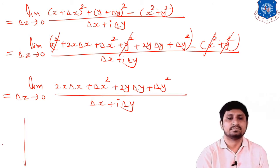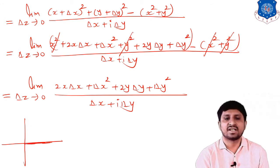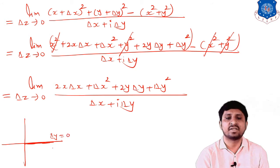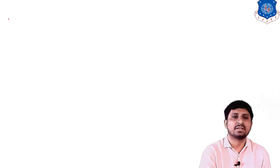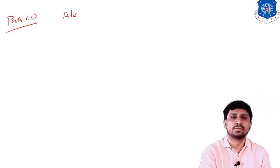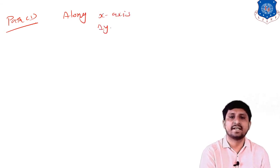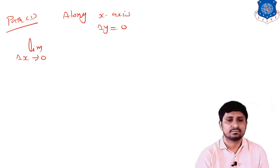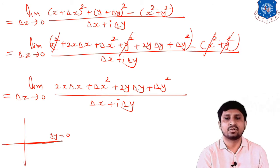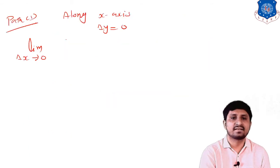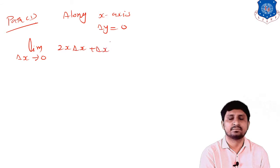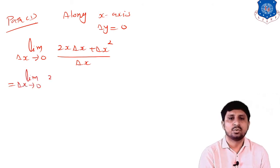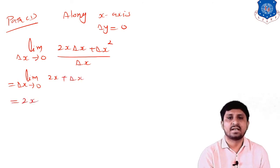Path 1: along the x-axis, so δy = 0. The expression reduces to the limit as δx → 0 of [2x·δx + (δx)²] / δx = limit as δx → 0 of (2x + δx) = 2x.